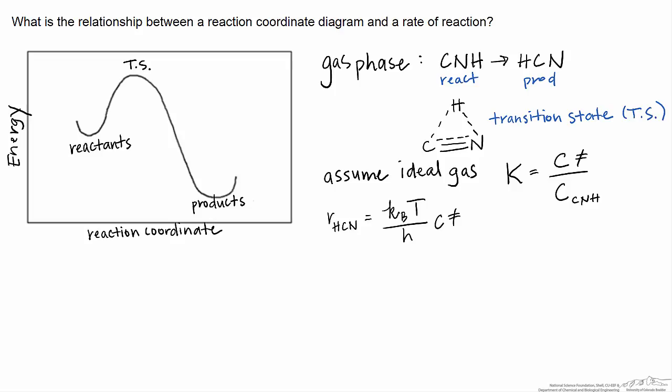The idea here is that once we've achieved enough energy to produce this transition state and we've come up to this maximum on the potential energy surface, we don't need any more energy for the molecule to fall into the product state where the hydrogen is over next to the carbon.